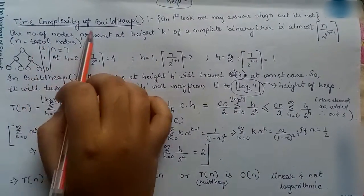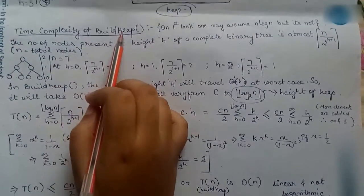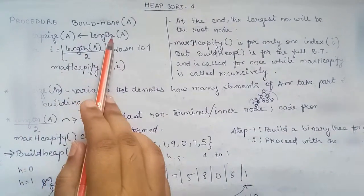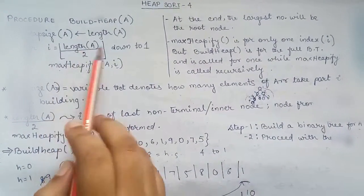Now let's discuss the time complexity of build heap. This is the algorithm for build heap. This is constant time steps. This is from n by 2 down to 1.